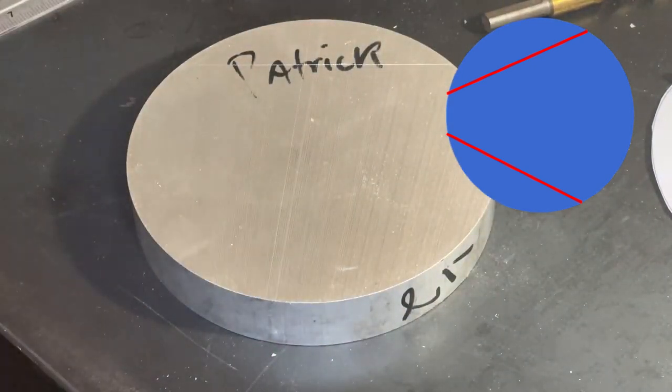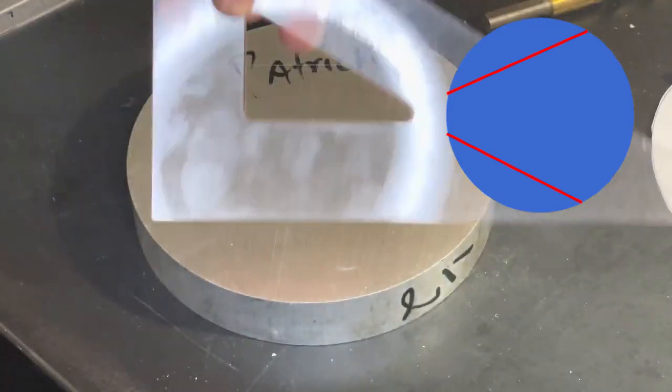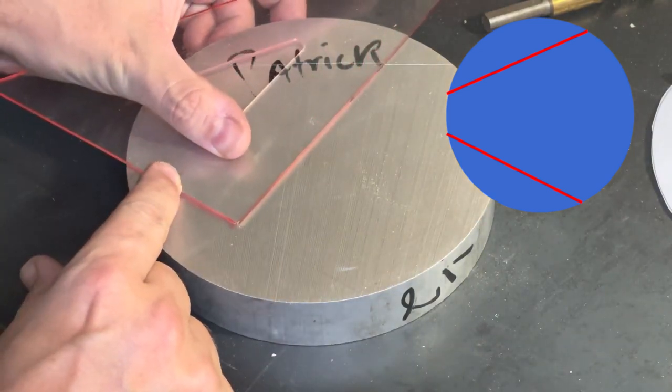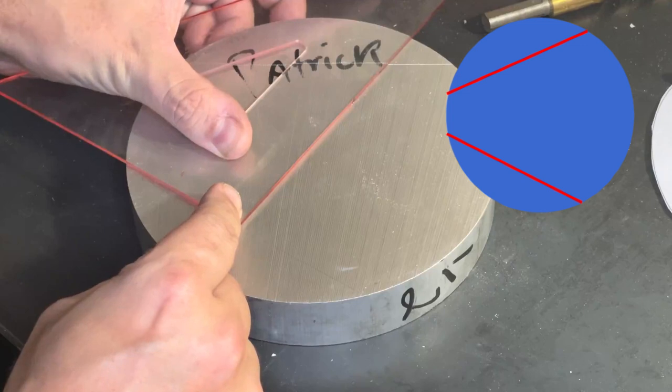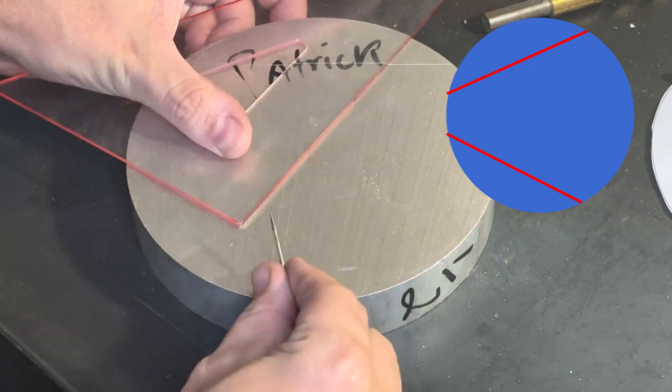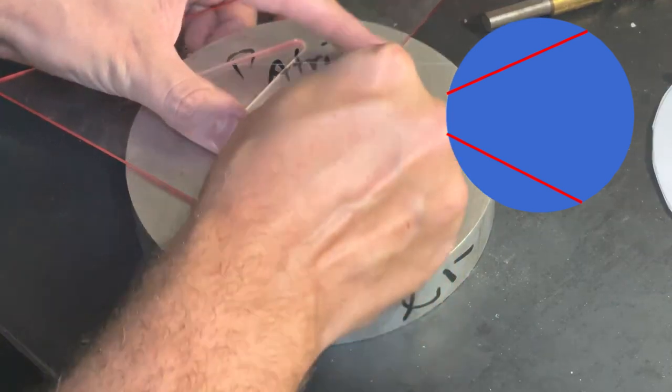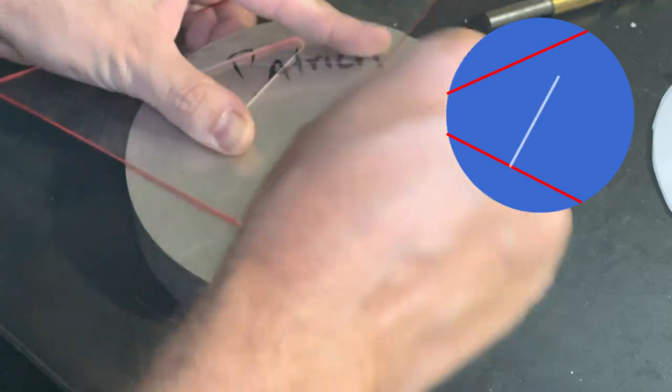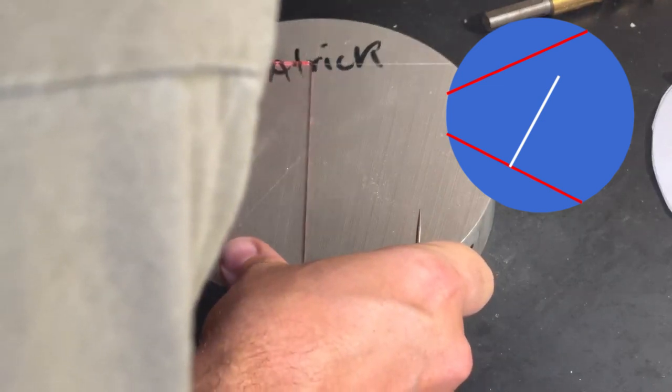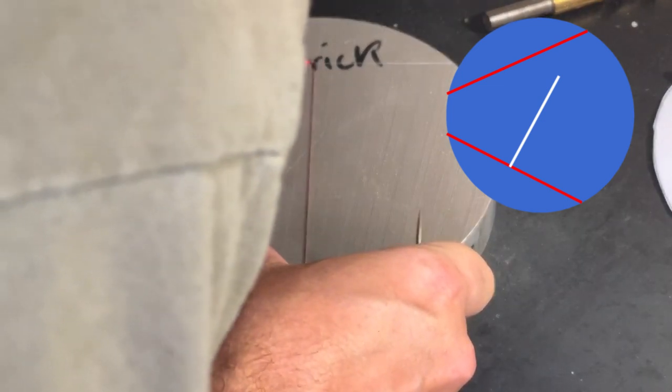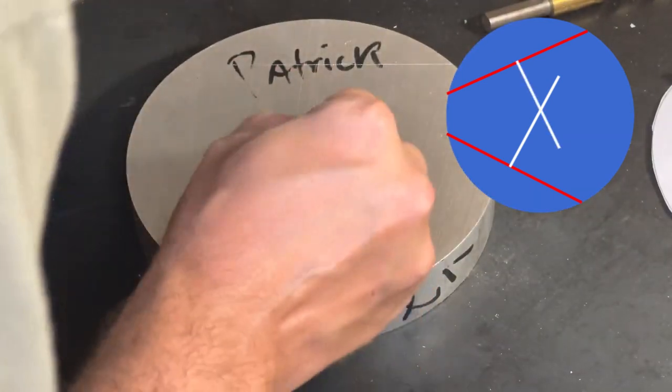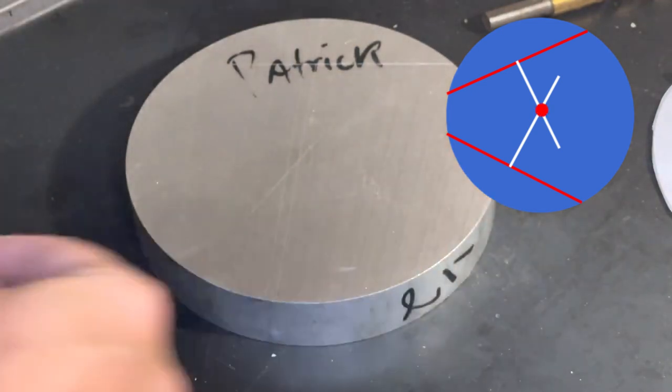So let me just mark that. Okay, so now I'm going to take my triangle and line it up on here as best I can, and scribe my line going up. And then on this one, we'll do the same thing. Get it straight on there and scribe your line. And right here is the center point. That's where it intersected.